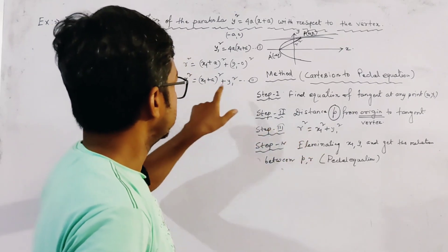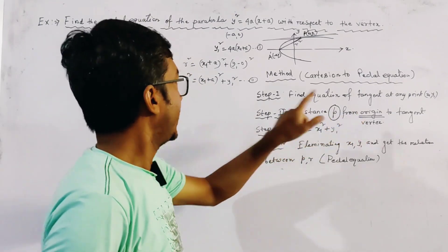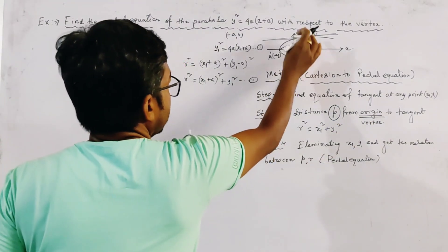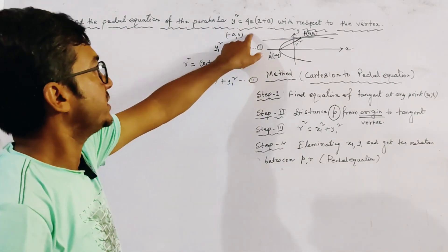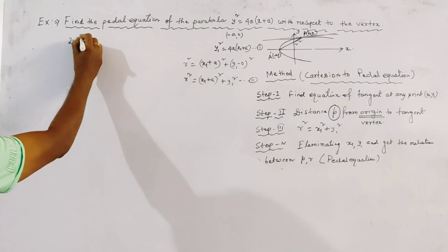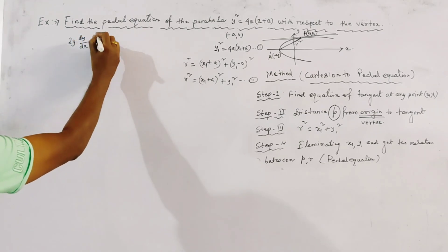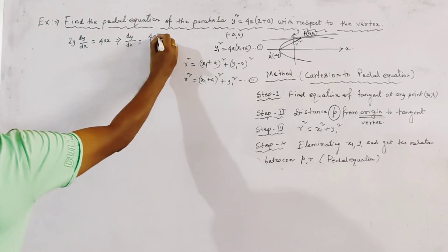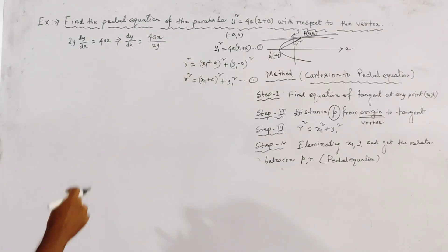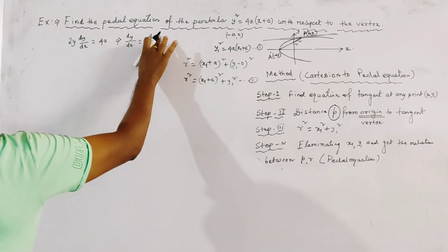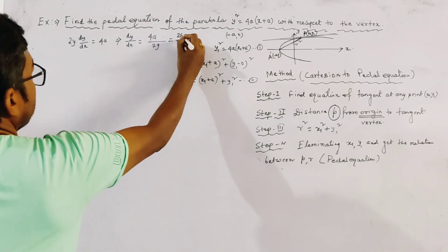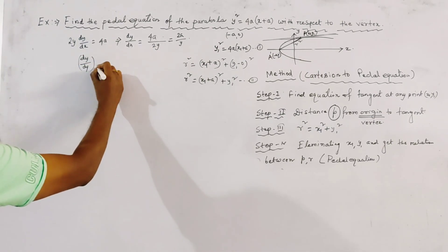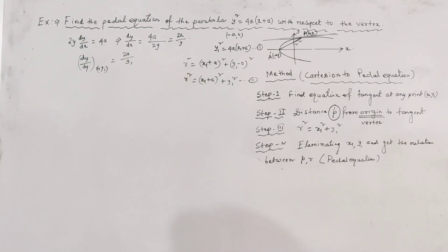Since the point of reference is the vertex, not the origin, we now find the equation of the tangent. To do so, we differentiate Relation 1: 2y·(dy/dx) = 4a, so dy/dx = 2a/y. The derivative at point P(x1, y1) is given by 2a/y1.